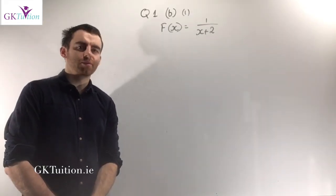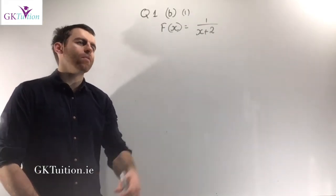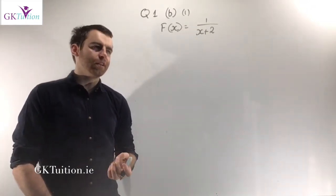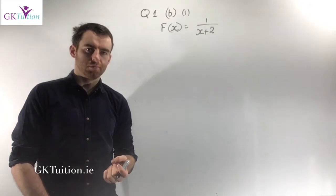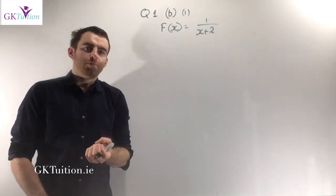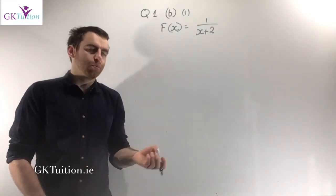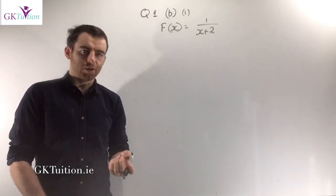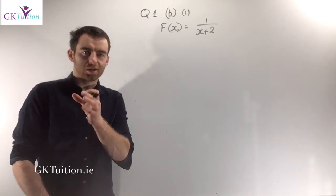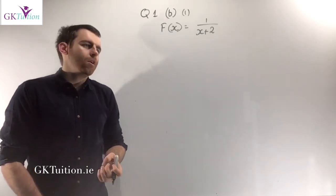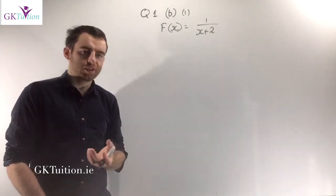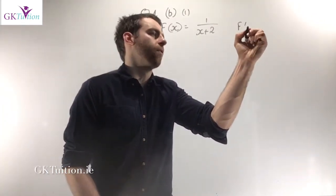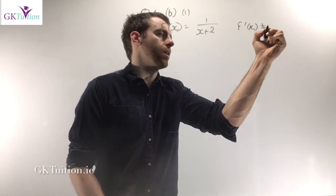For B part 1, there are 10 marks. You're given f of x equals 1 over x plus 2 and asked to prove this function has no turning points. To find turning points you set the first derivative equal to 0, so if the function has no turning points, the slope is never equal to 0 — meaning the first derivative can never equal 0.